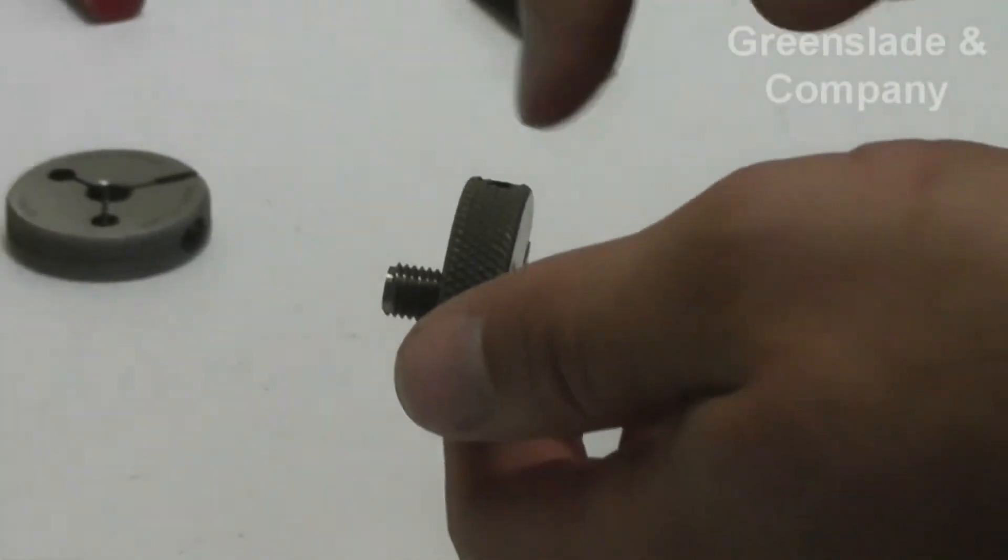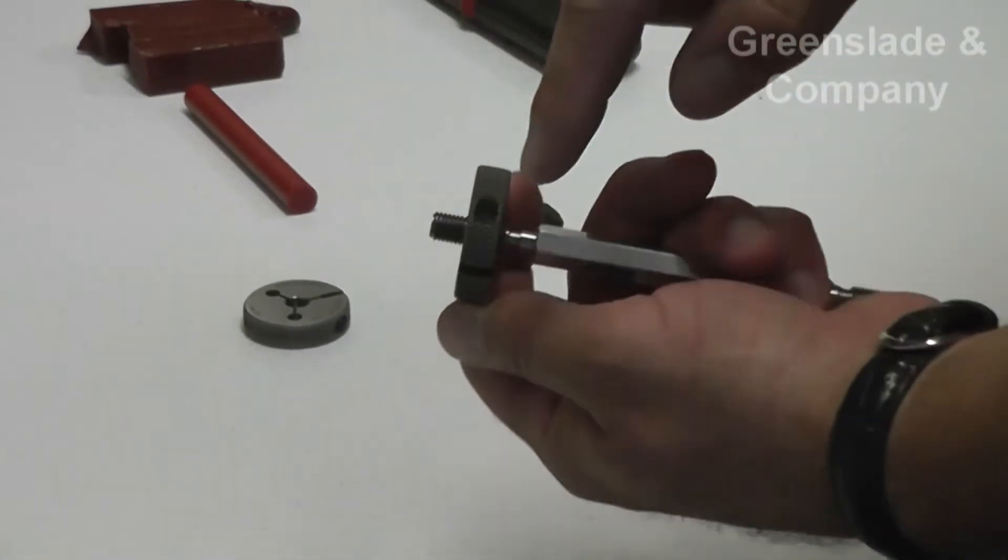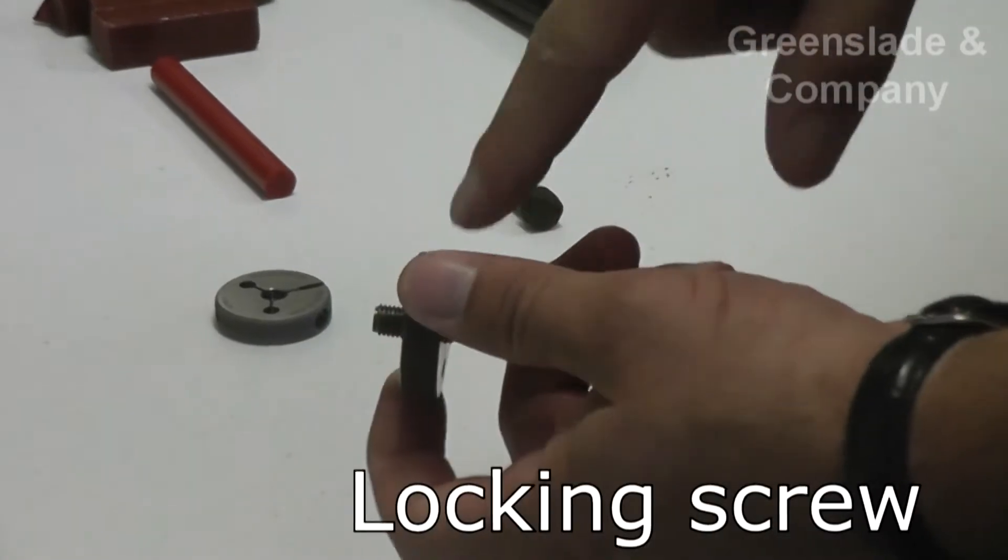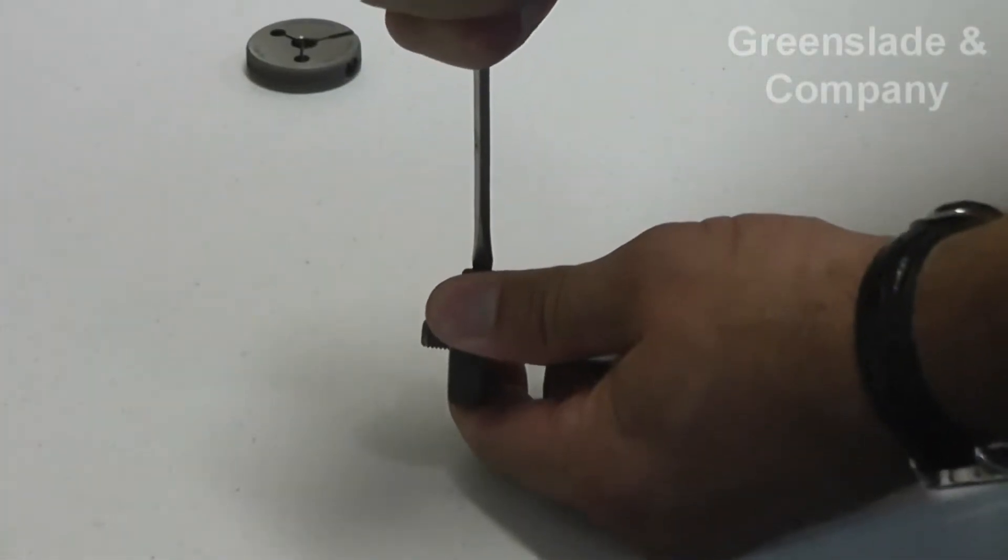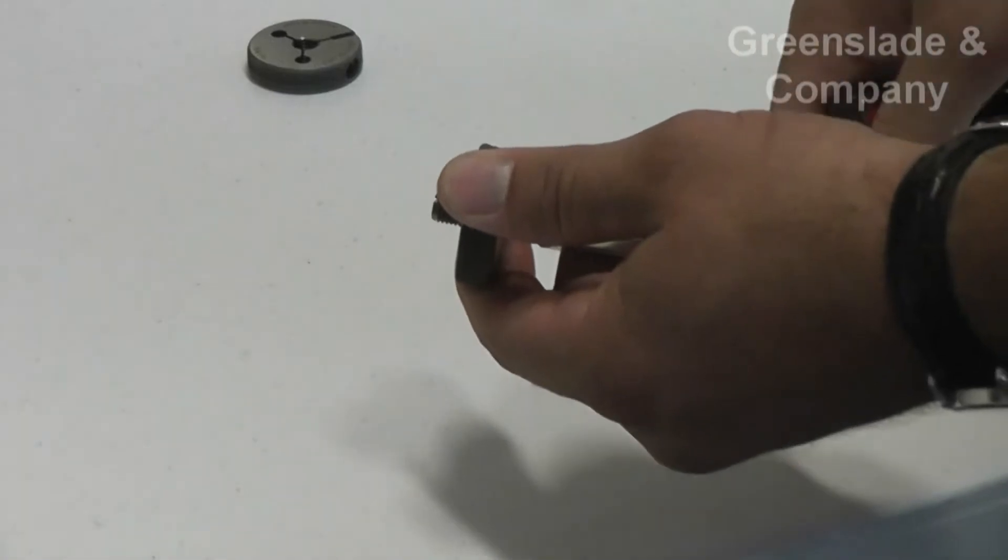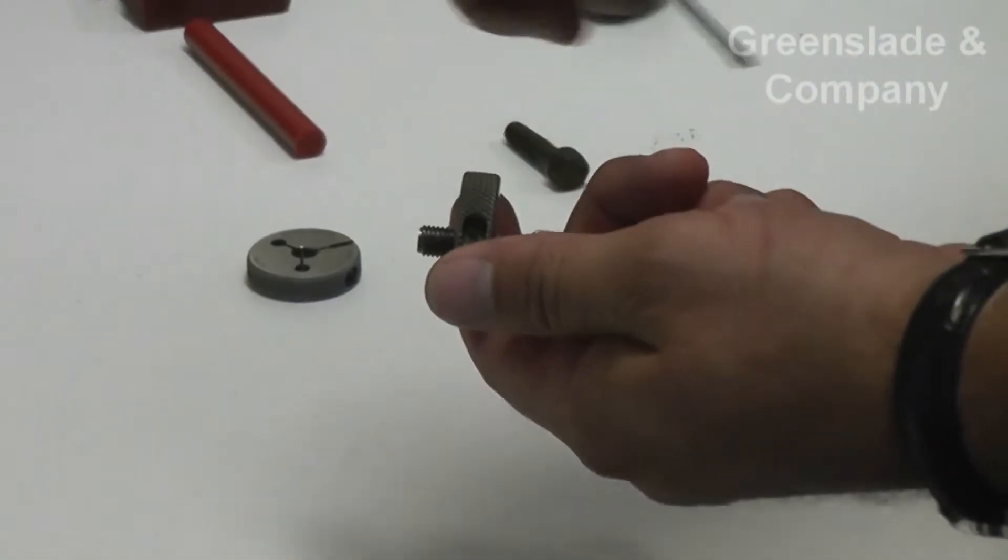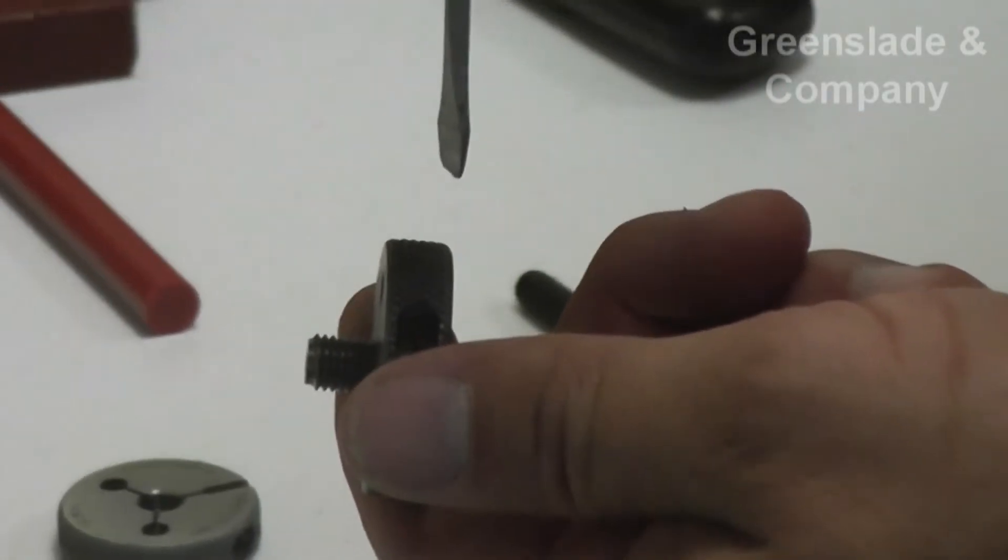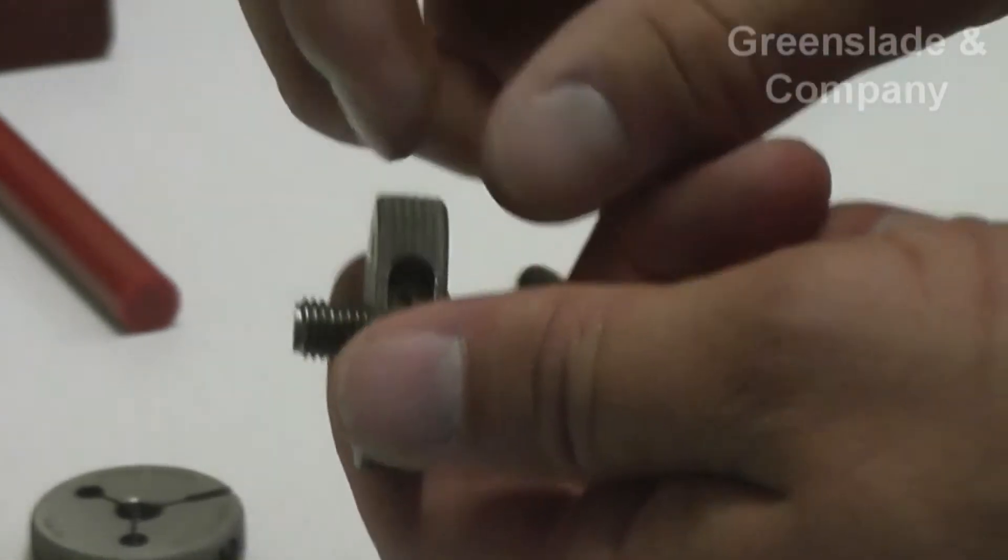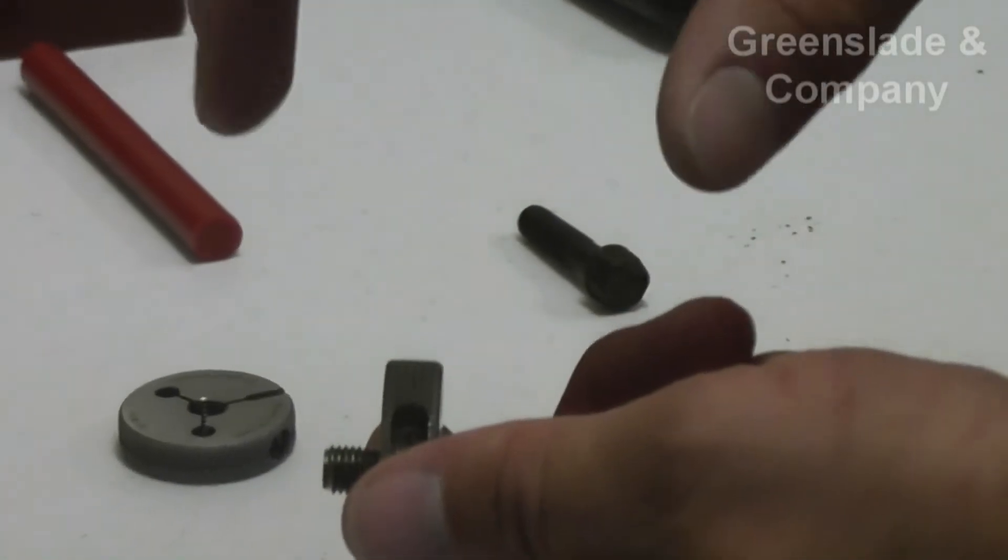You've got two sets of hardware in a ring gauge: your locking screw and your adjusting screw. First things first, we're going to have to loosen our locking screw so that we can do our adjustment. Now it gets a little tricky because as you tighten your adjusting screw, you're spreading the ring out, which makes it looser.